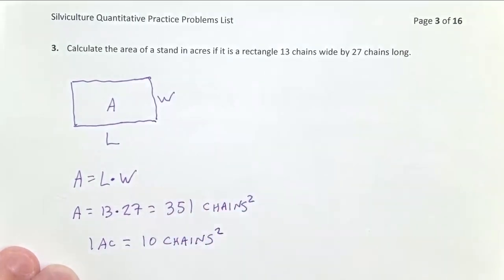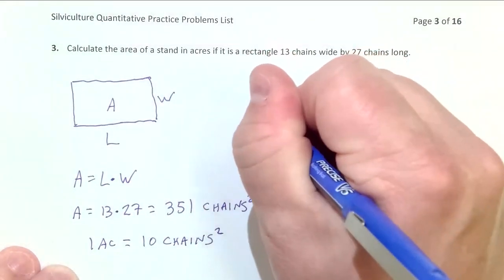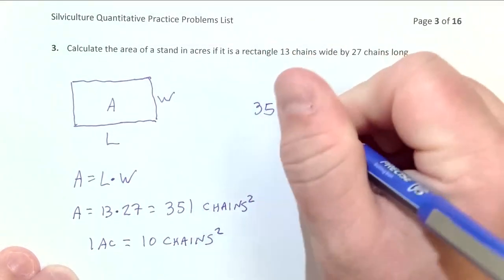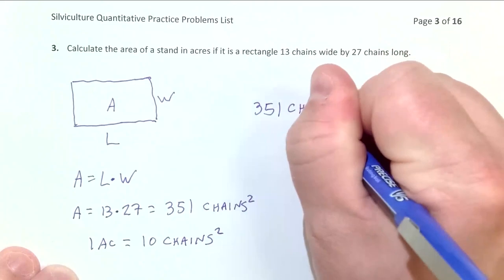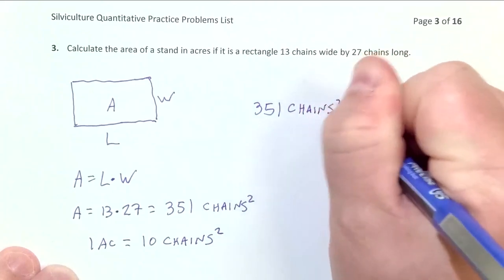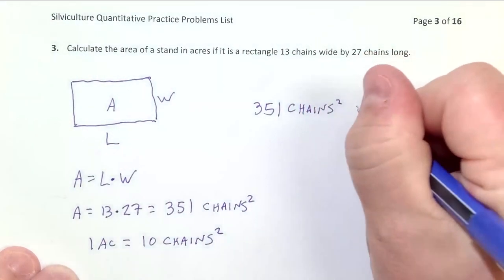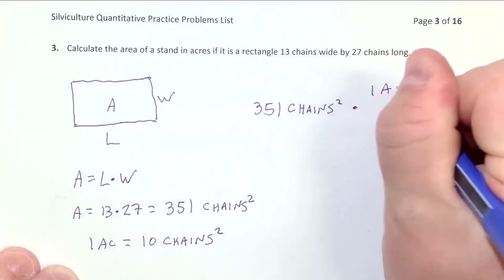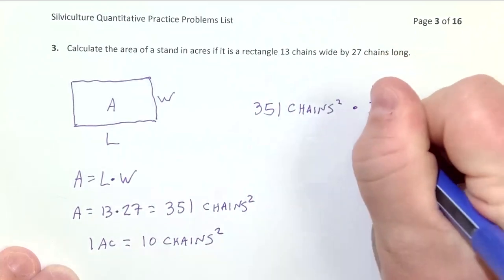So once we know that, we can multiply our 351 chains squared by one acre divided by 10 chains squared.